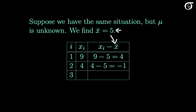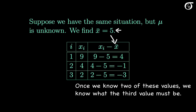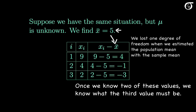But something different arises now. Once we know the sample mean and we know the first two observations, we know what the third observation must be. If the mean of the three observations is 5 and the first two are 9 and 4, then the third must be 2, and we know that this third deviation must be minus 3. The deviations from the sample mean always sum to 0. So this third observation isn't free to be any value anymore — we know it must equal 2. Here we have only 2 degrees of freedom. We started with 3 degrees of freedom from 3 independent observations, but we lost 1 degree of freedom when we estimated the population mean mu with the sample mean x-bar.